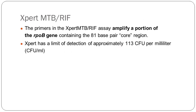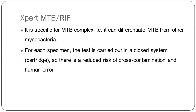The plain GeneXpert which is right now in the program — not talking about Ultra — can detect up to 113 colony-forming units. That's very good because it's better than AFB smear, and even if it's a paucibacillary disease you'll pick it up. Most importantly, it's very specific for MTB complex, so you're not going to get a BCG giving your GeneXpert positive — though sometimes you do. And because it's a closed system, cross-contamination is less.